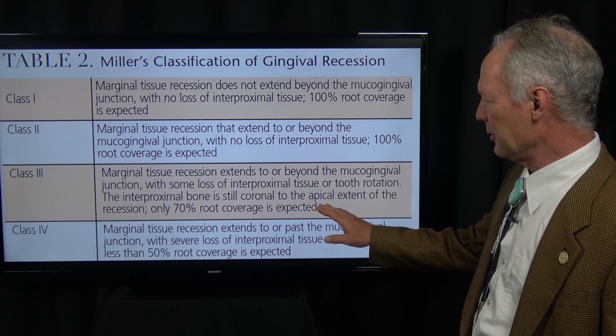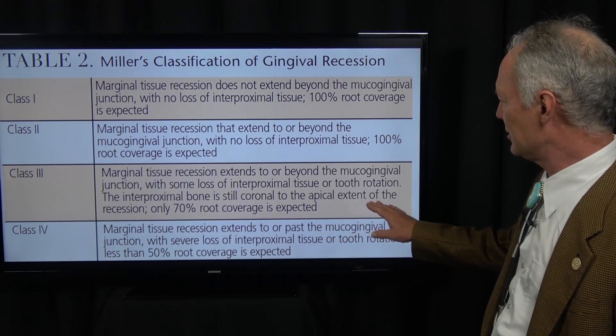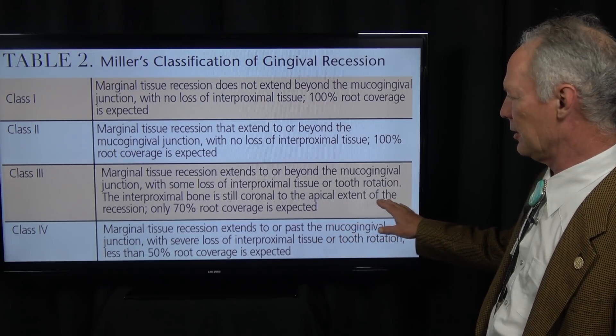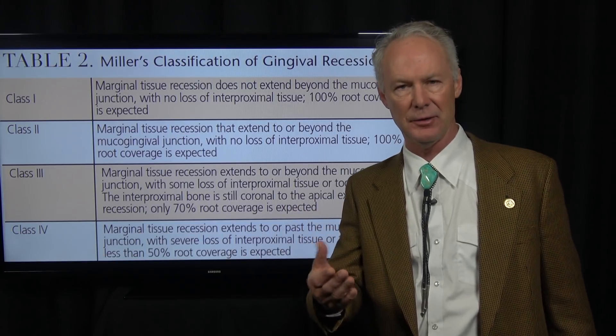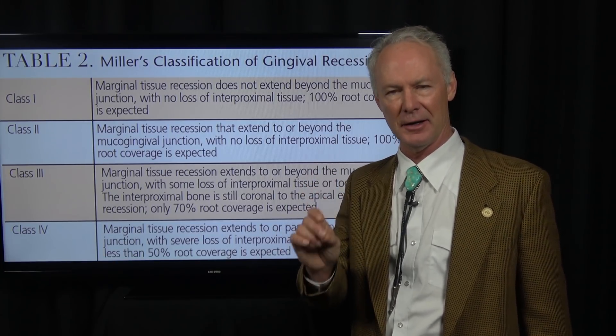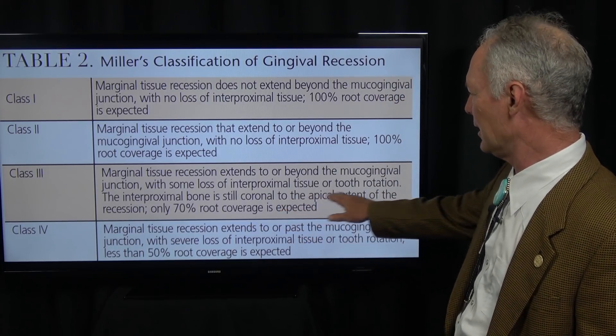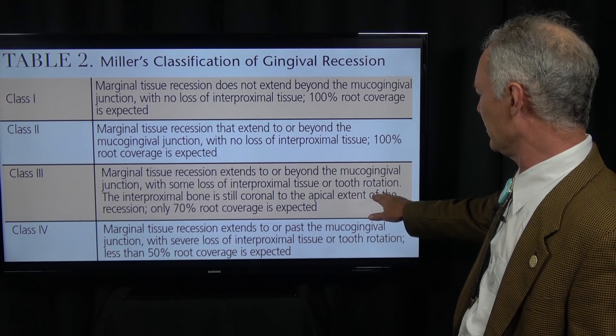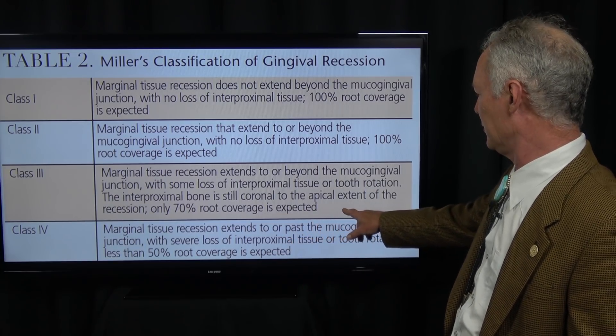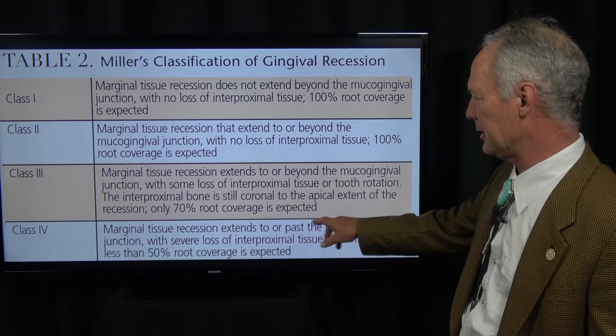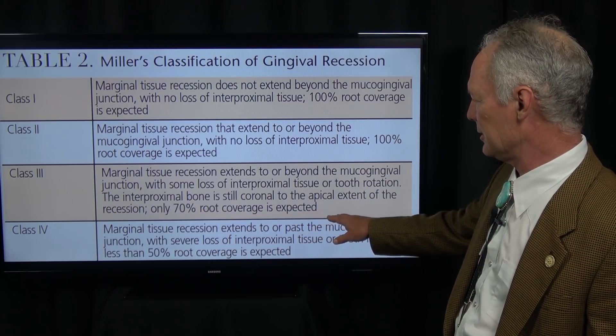Class 3: marginal tissue recession extends to or beyond the mucogingival junction — meaning the recession is into the unattached, non-keratinized gingiva — with some loss of interproximal tissue or tooth rotation, meaning the interproximal papilla have recessed. The interproximal bone is still coronal to the apical extent of the recession, and only 70% root coverage is expected.